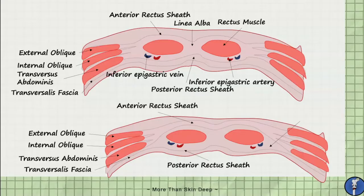The anterior and posterior rectus sheath fuse in the midline to form the fibrous linea alba, and fuse on each lateral side of the rectus abdominis muscle to form the linea semilunaris.